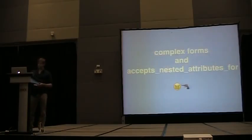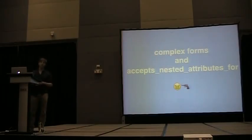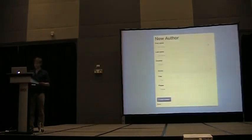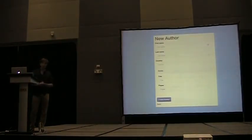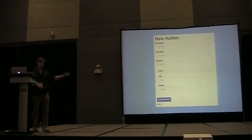So, complex forms and accepts_nested_attributes_for. You can use complex forms and accepts_nested_attributes_for if you want to create two resources at the same time. Here is a complex form — and it's actually not even that complex. I have an author, and I want to be able to create books that belong to the author at the same time.